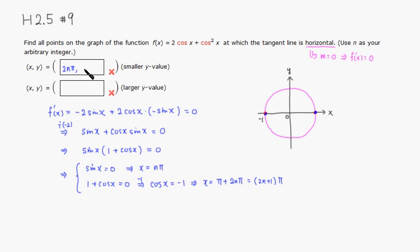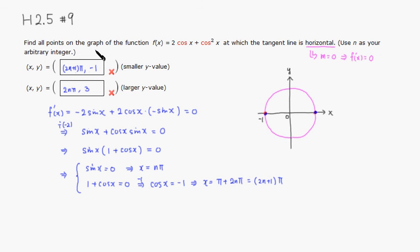So the points where the tangent line is horizontal are (2nπ, 3) and ((2n+1)π, -1). Those are our two families of points.